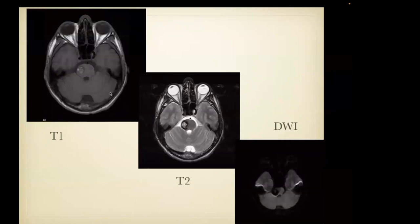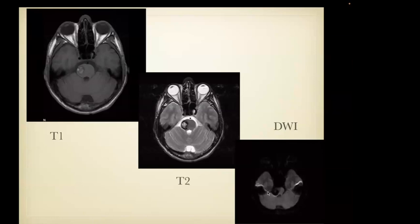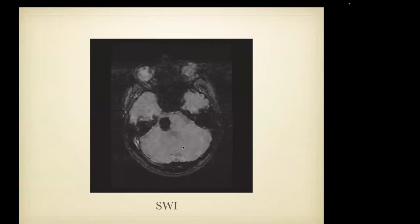Here are some susceptibility artifact examples. This is a cavernoma in the pons — you see the central T1 shortening from blood products and the complete hemosiderin ring, which you can see well on the fast spin echo T2 scan with all the detail of the cavernoma. On the diffusion scan — an echo-planar scan, which is very sensitive to susceptibility — we have no detail, just a rind of high signal intensity, which is very common with susceptibility artifacts representing displaced signal. On the susceptibility-weighted scan, which is designed to maximize susceptibility artifacts, we again have no detail within the cavernoma because we're overwhelmed by the susceptibility effects.